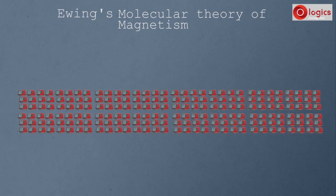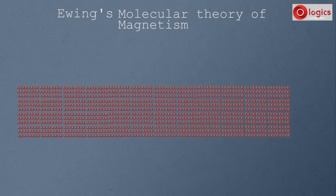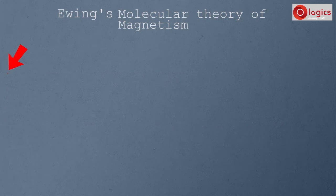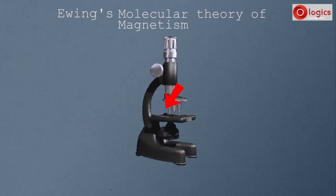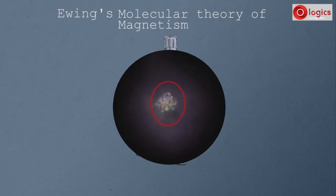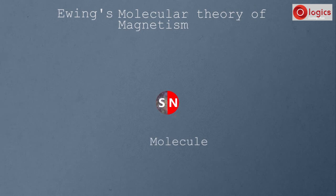According to this theory, if we further and further break these tiny magnets, we reach a point where the pieces cannot be broken further. Observing this tiny piece through a microscope, this smallest unit is known as a molecule. According to Ewing, this tiny molecule itself acts like an independent magnet with north and south poles, and this molecule cannot be broken further — a single pole magnet is never formed.